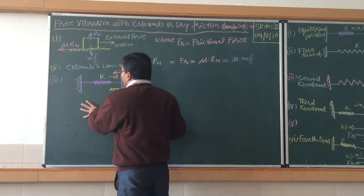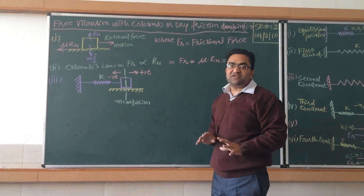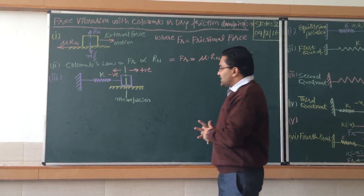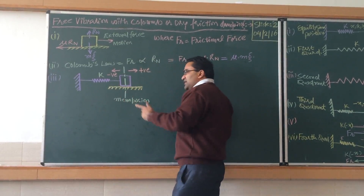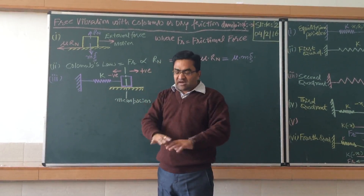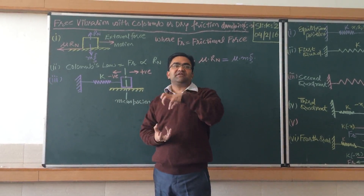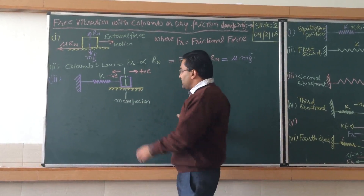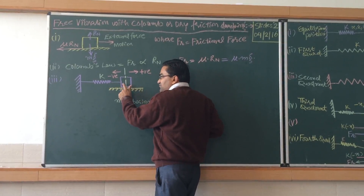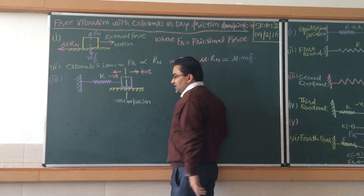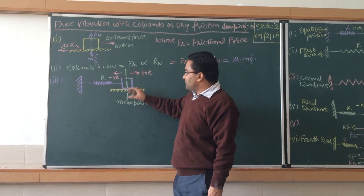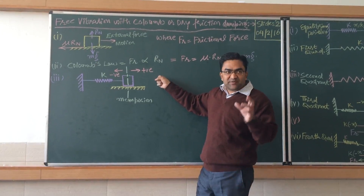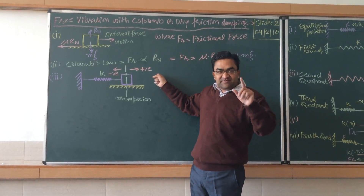Now we want to analyze Coulomb's law of dry friction damping mathematically, so we will be solving a derivation. Before solving that derivation, we have some assumptions. We have a spring-mass system lying on a surface — unlike earlier cases where it was suspended. The mass M is lying on the surface, and if displaced to the right, it moves through a displacement x.